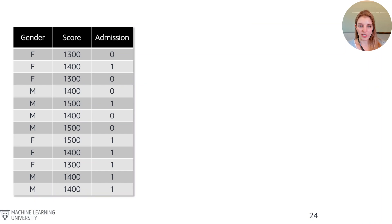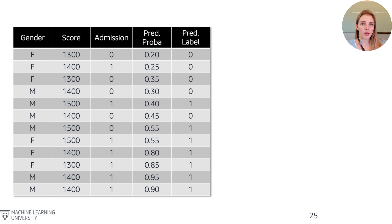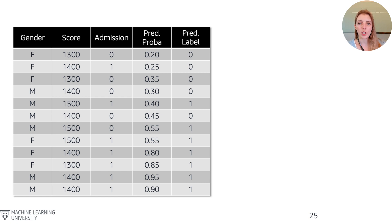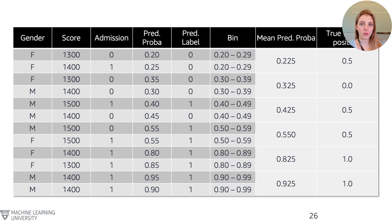Using our university admission example with a sensitive attribute, a score feature, and an admission outcome: after training a model, it produces predicted probabilities for each row. For example, the first data point might get 0.2, the second 0.25, the third 0.35, and so on. Applying a decision threshold of 0.5, the predicted label — accepted or denied — is what's provided to the student.